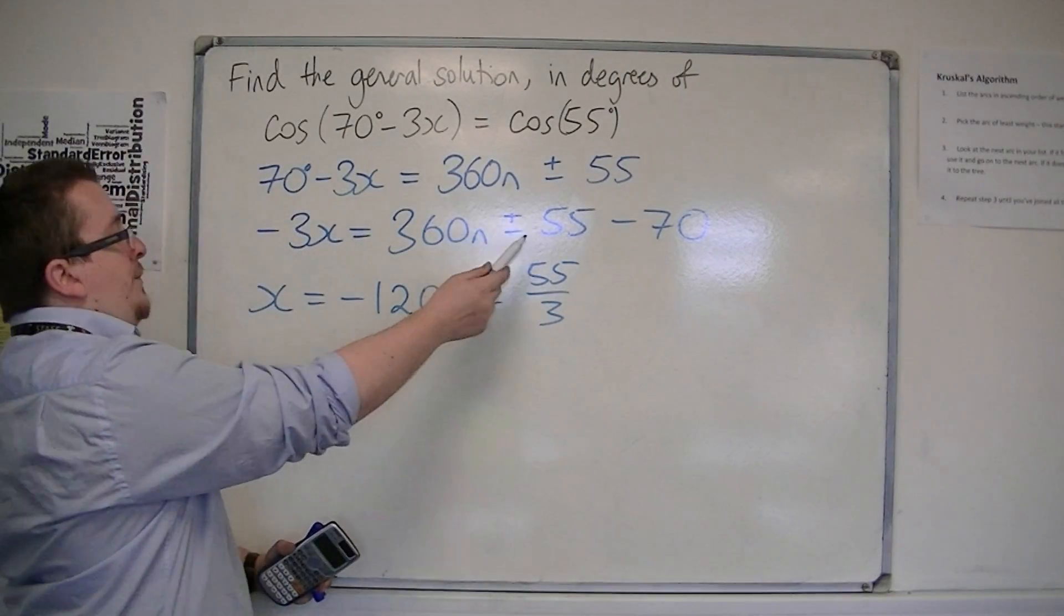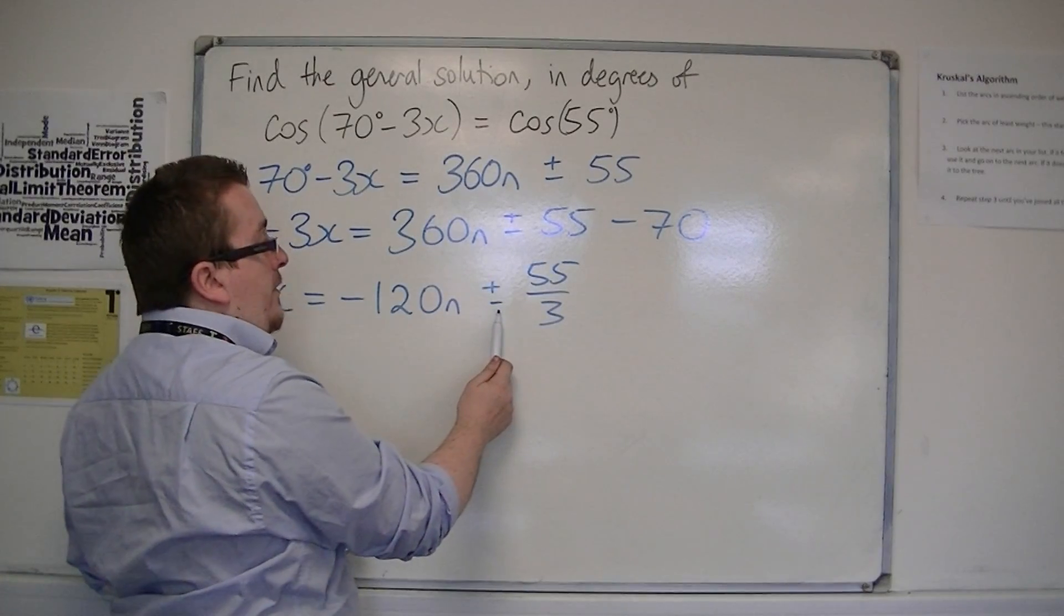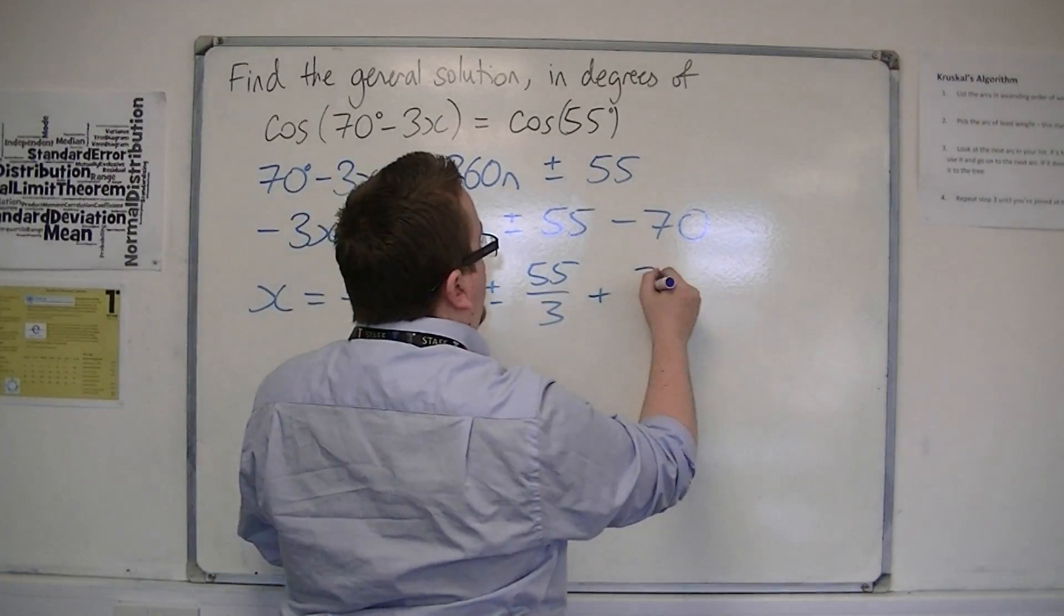If I divide plus or minus by a minus, I'm still going to have a plus and a minus. So that's why the plus or minus survives. And dividing -70 by -3, I get +70/3.